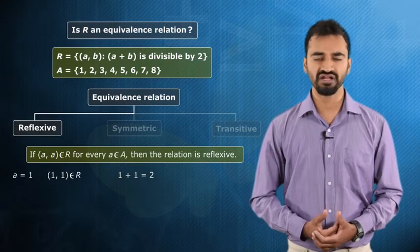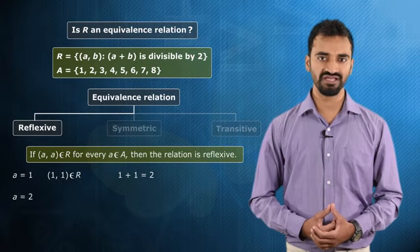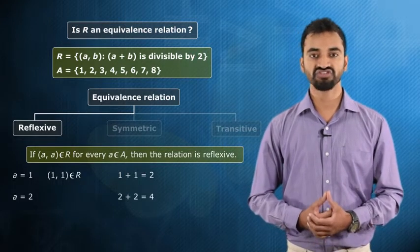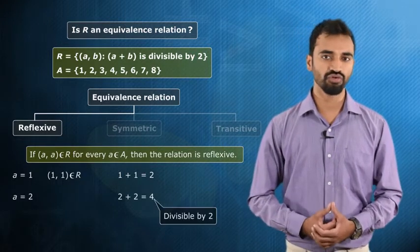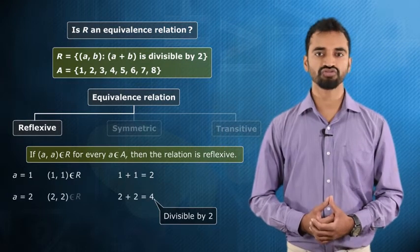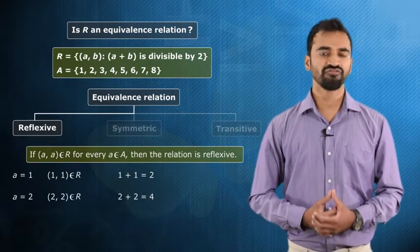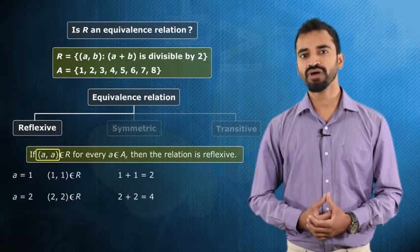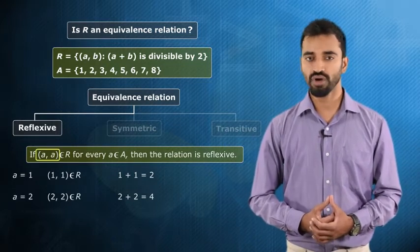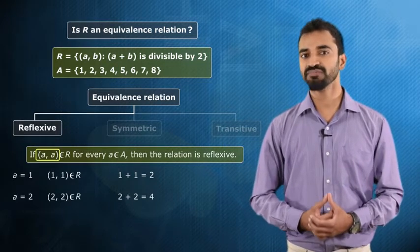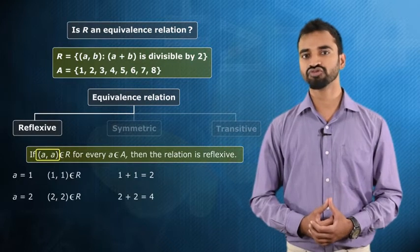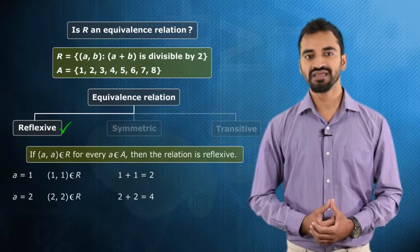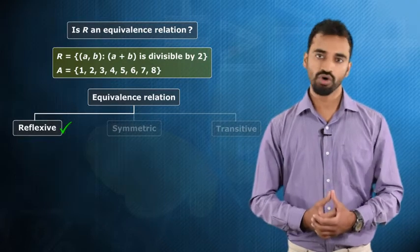Let's take another element: 2 belonging to set A. 2 plus 2 is equal to 4, which is again divisible by 2, and therefore (2, 2) also belongs to R. As a matter of fact, for any element a belonging to set A, (a, a) will always belong to R, because a plus a will always be divisible by 2. Therefore, we can definitely say that the given relation R is reflexive on set A.